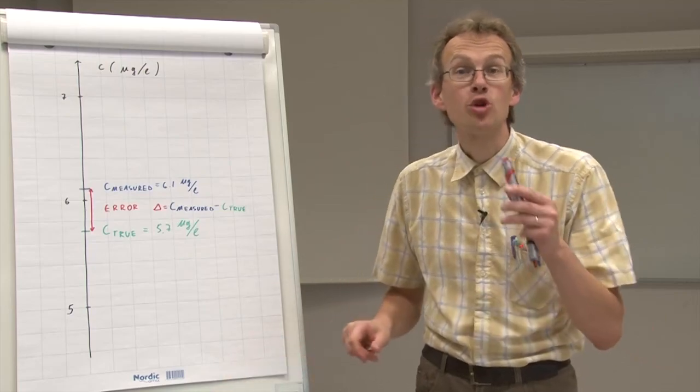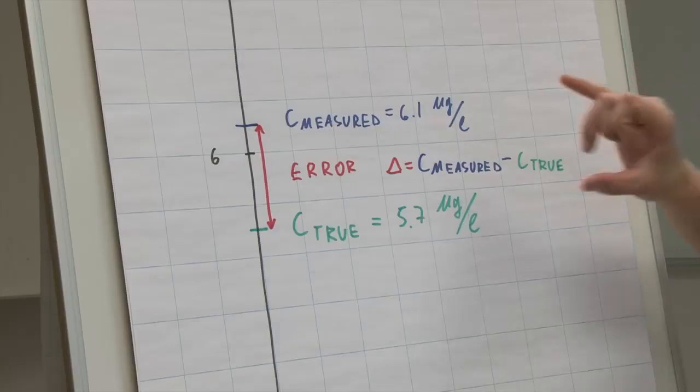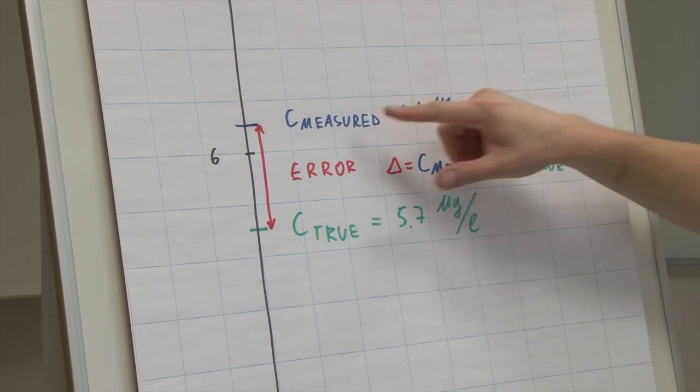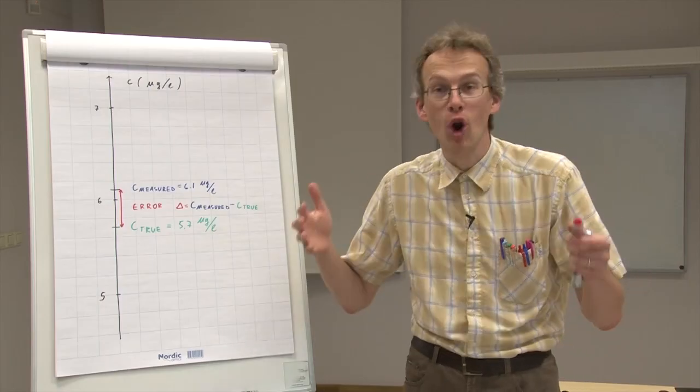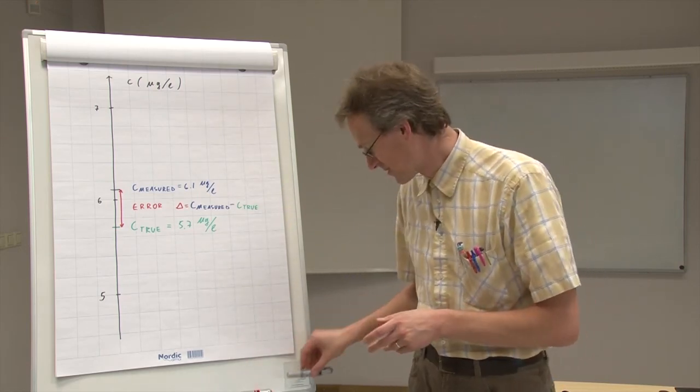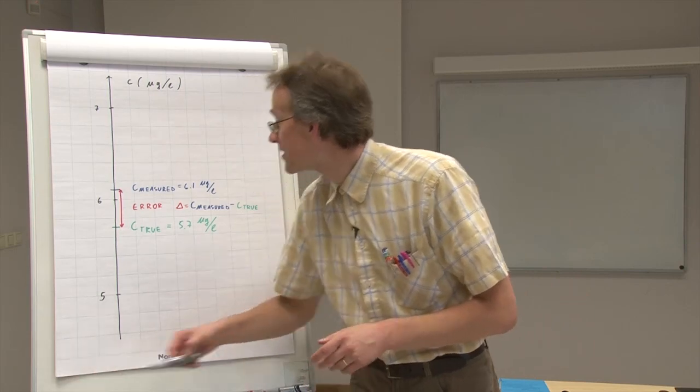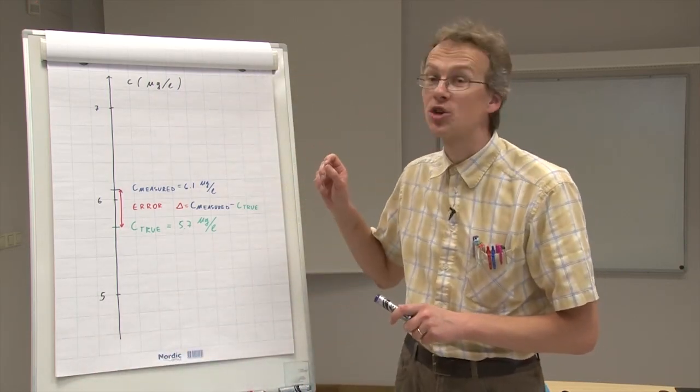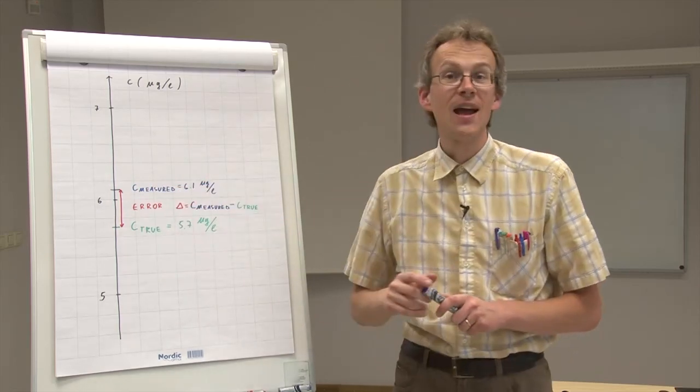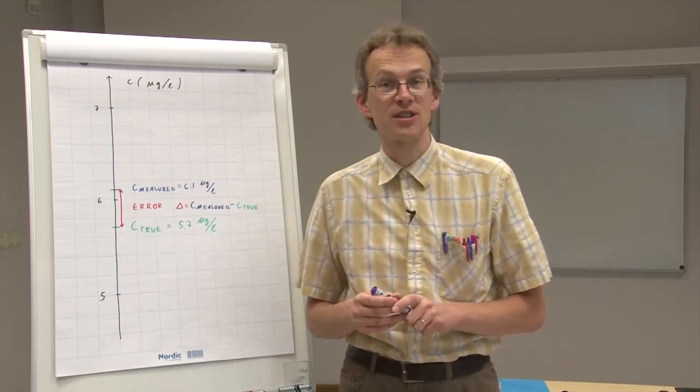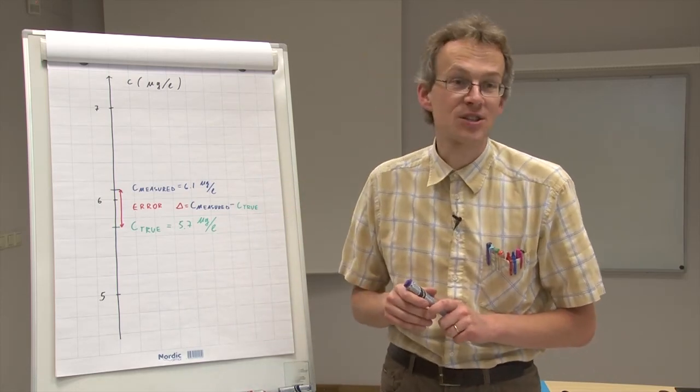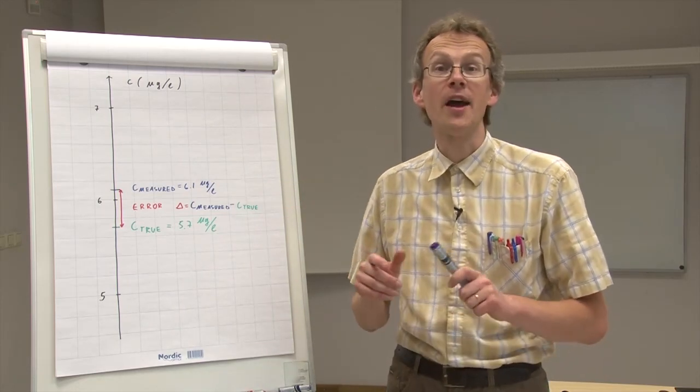So, unfortunately, people cannot use the concept of error or true value for characterizing the quality of this measured value here. So, what people do instead, they define a range around this measured value. And they define this range in such a way that the true value would be within this range with high probability.